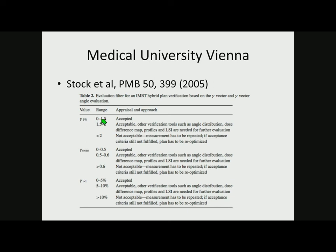Stock similarly looked at three criteria: the top 1% of gamma values, the mean value, and the percentage greater than one. All three have to pass: top 1% less than 1.5, mean less than 0.5, and only 5% failing. There are intermediate steps to investigate further, and if the plan fails you re-optimize, remeasure, or simplify the plan.